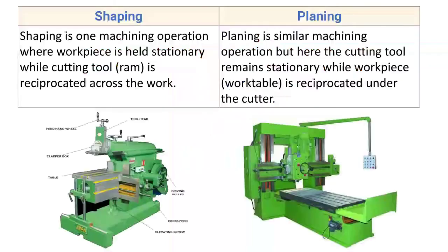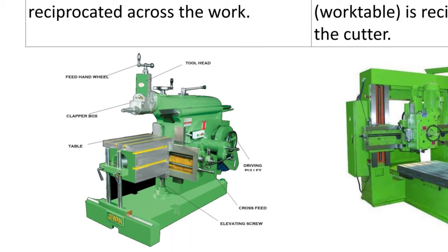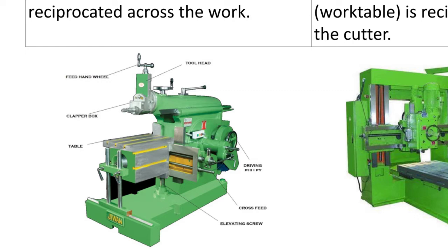The very first difference: shaping is a machining operation where the workpiece is held stationary while the cutting tool — that is, the RAM — is reciprocated across the work. In the shaper machine, the workpiece is fixed to the table and the cutting tool is fixed to the tool post. The cutting tool reciprocates across the workpiece to remove material from its surface.